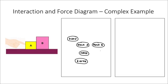I've listed my objects: I have the hand, block A, block B, the table that they're sitting on, and also the earth. Now I'll start thinking about how all these objects are interacting with each other. In this case, we'll ignore friction. Take a moment, pause the video, and see if you can add all the interactions on this diagram.